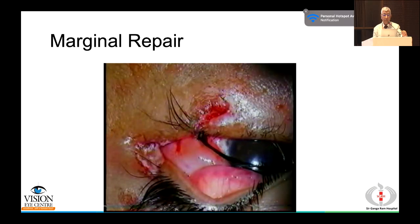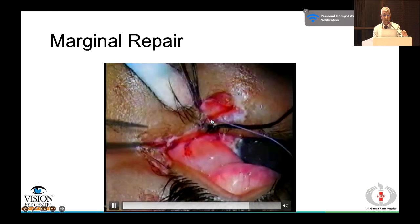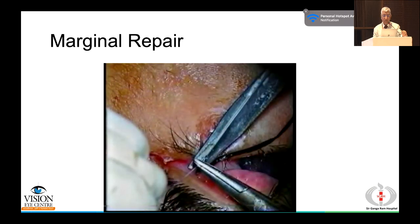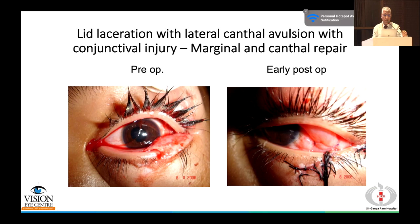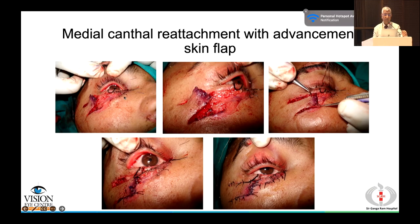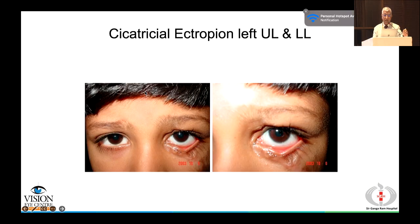The tarsus is repaired with partial-thickness 5-0 vicryl sutures to prevent globe irritation, then skin is closed. Larger defects require flaps or grafts such as an advancement skin flap. For medial canthal repair, attachment must be to the posterior lacrimal crest behind the sac; for lateral canthal repair, attachment is to the periorbita behind the orbital margin using double-arm sutures in front of the margin to ensure good canthal anchorage.